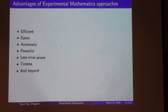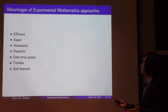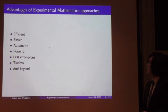Here are some advantages of the experimental mathematics approach. It is efficient because computers can calculate much faster than humans. It can be easier, automatic, and computers are very powerful. It is less error-prone — humans usually make more mistakes than computers. It is tireless: computers do not need to sleep, eat, or drink.